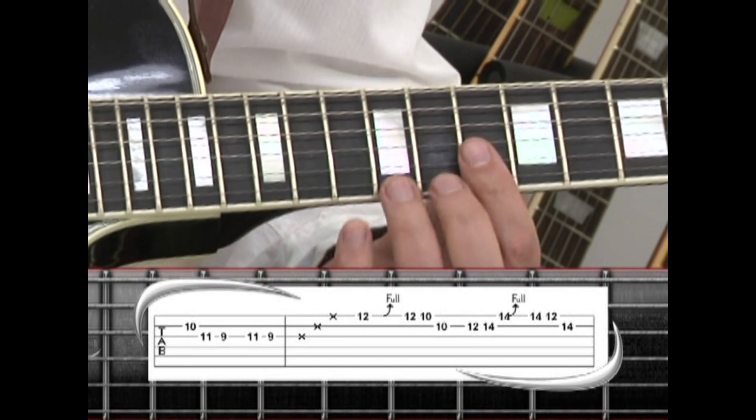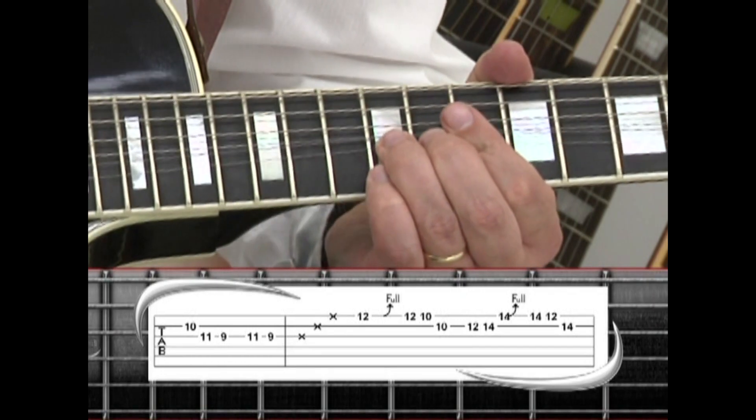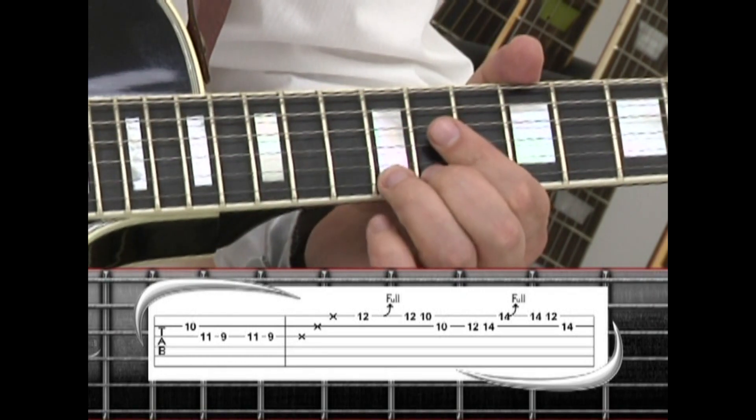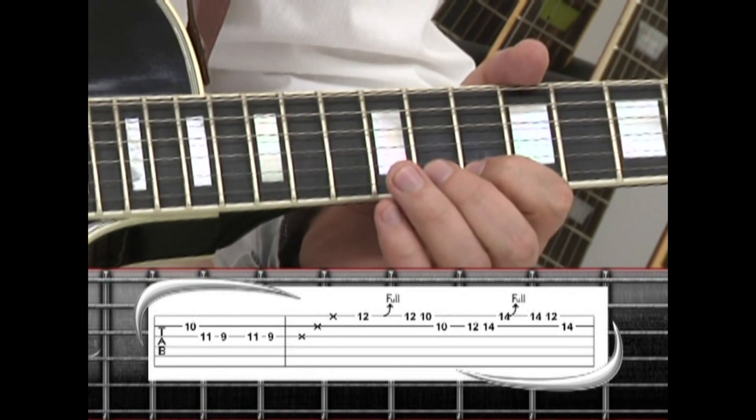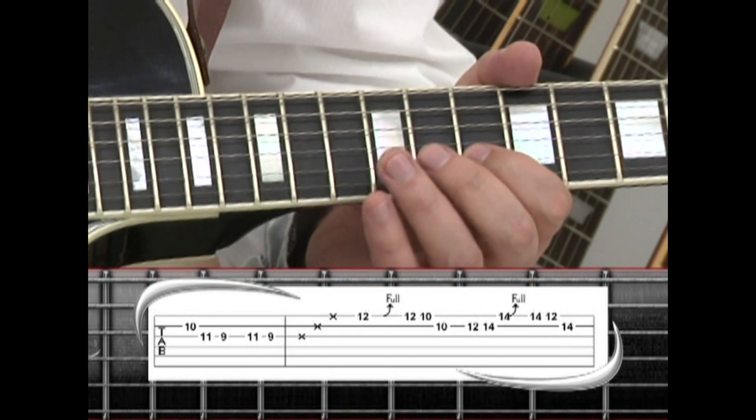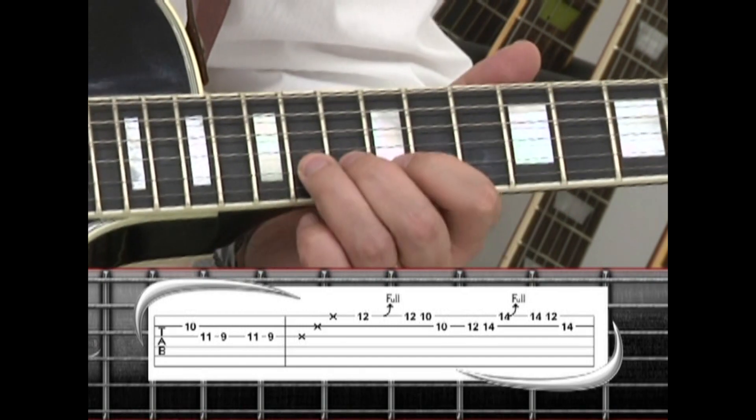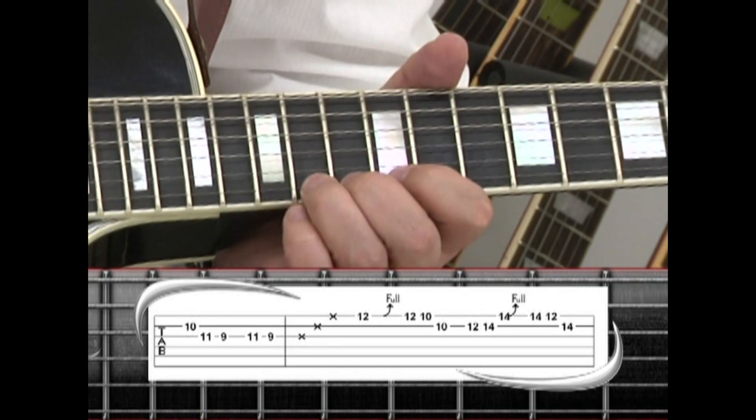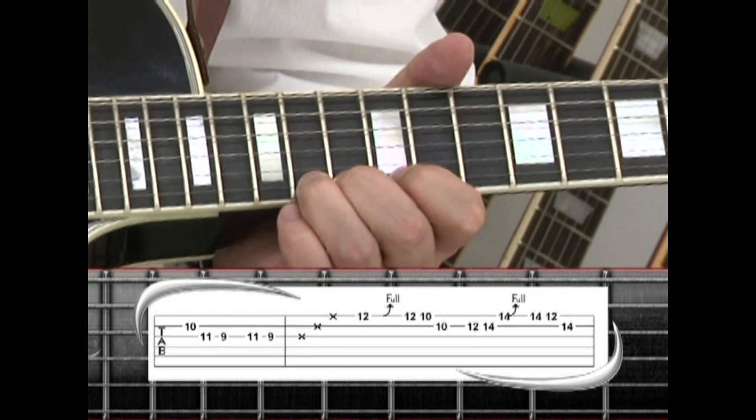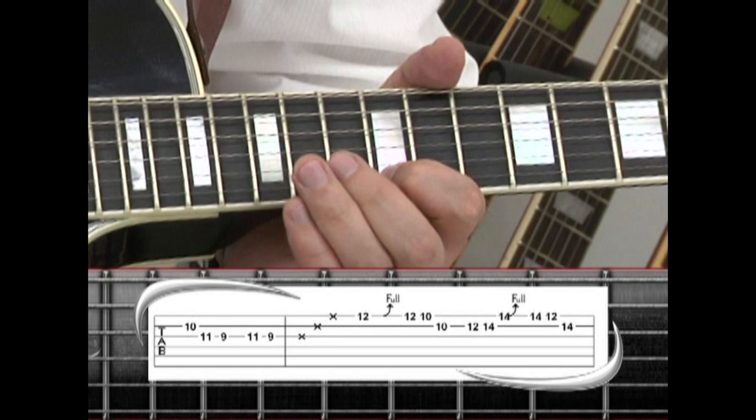To the 1st string 12 with the gradual bend, 12, to 10, to 2nd string 10, 12, 14, to 1st string 14 bend, 14, to 12, to 2nd string 14.